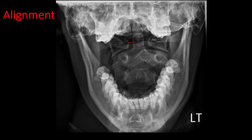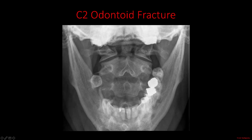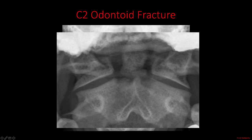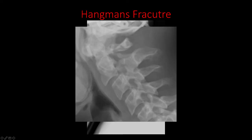In the odontoid view, lateral processes should be aligned in the same plane. The space between the lateral mass of C1 and the odontoid process should be equal, and the lateral aspects of the lateral masses should have less than 1 mm of malalignment. Identify and trace the entire C2 vertebra. As I trace the outline of C2, I can see a gap between the odontoid process and the C2 vertebral body, consistent with a fracture through the base of the odontoid process. In another example, tracing the cortical outline of C2 reveals a break in the C2 lamina — this kind of fracture is known as a Hangman's fracture.